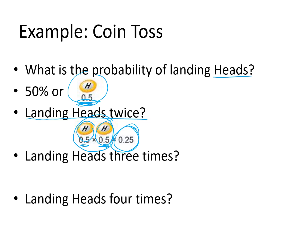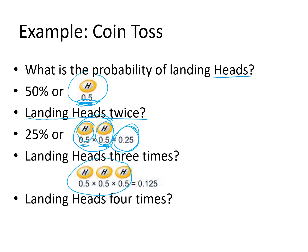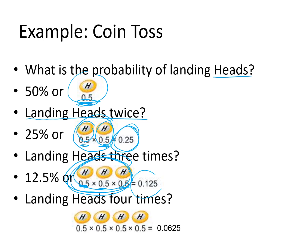The more times you do it in a row, the less likely a particular combined outcome becomes. For example, trying to get heads three times in a row: each flip has a 50% chance, but the outcome of all three in a series is 0.5 × 0.5 × 0.5 = 0.125, or a 12.5% chance. Landing on heads four times would be half of that again: 6.25%.